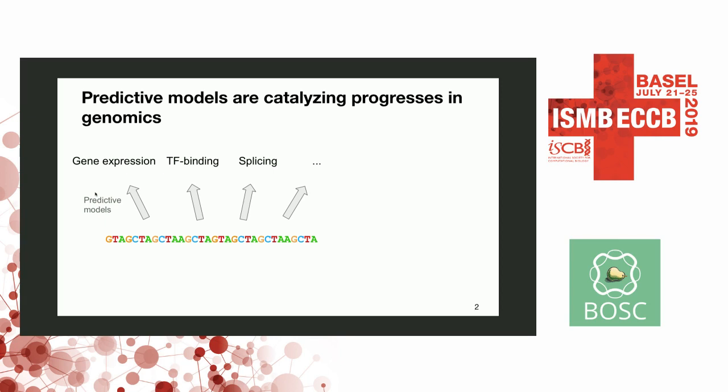One of the applications in genomics is answering basic biological questions relating genotype to molecular processes, in particular in gene expression. But you also have pervasive applications of machine learning and trained predictive models in variant calling, in designing experiments, etc. So there's a need to share those models.